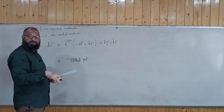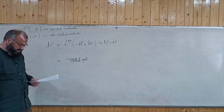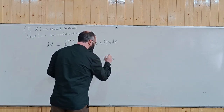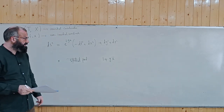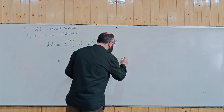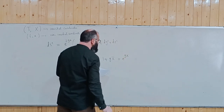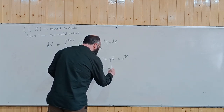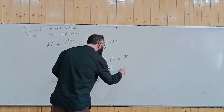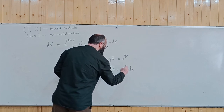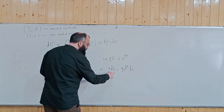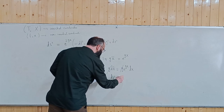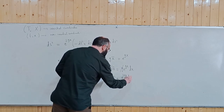I will only consider the coordinate transformation of the spatial part, not the temporal part. This is a kind of transformation where x-bar is our new coordinate variable. I can write this as e raised to gx. Now differentiating, g dx-bar equals g e raised to gx dx, so g and g cancel out, giving dx-bar squared as e raised to 2gx dx squared.